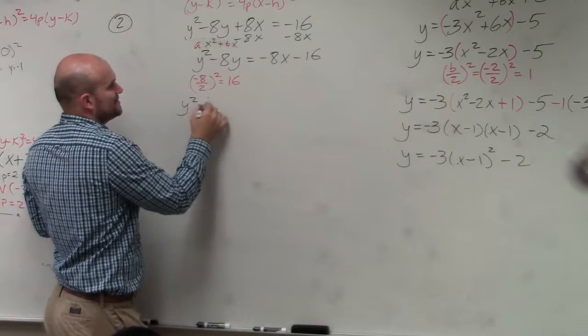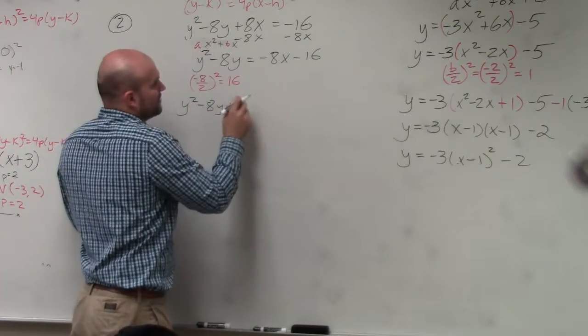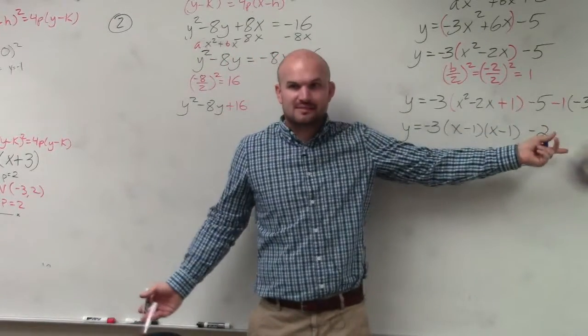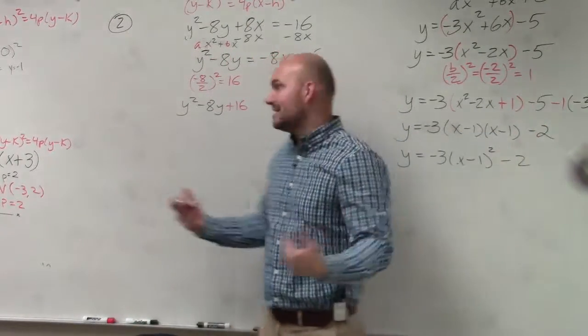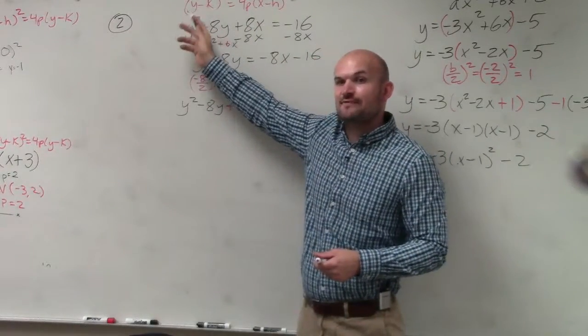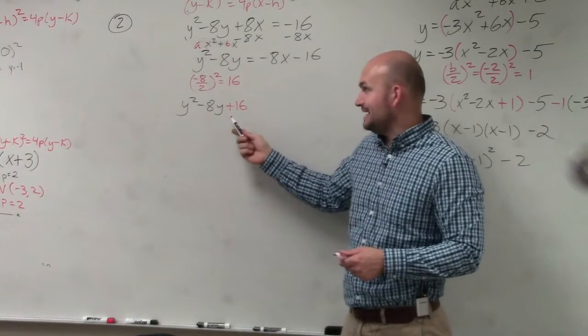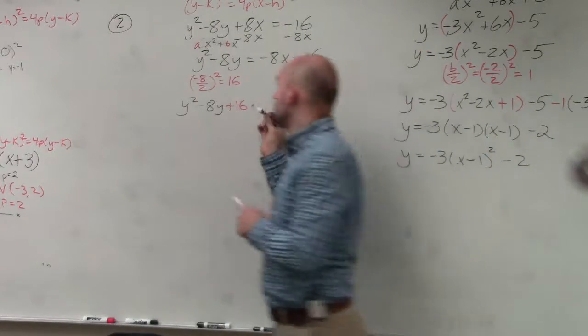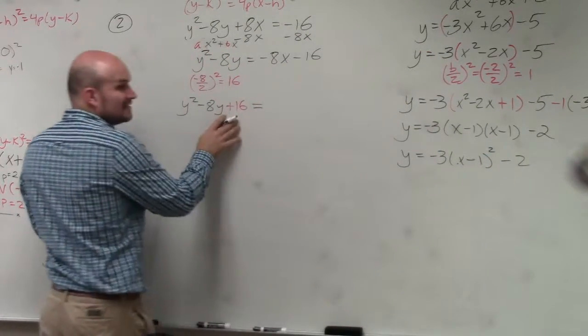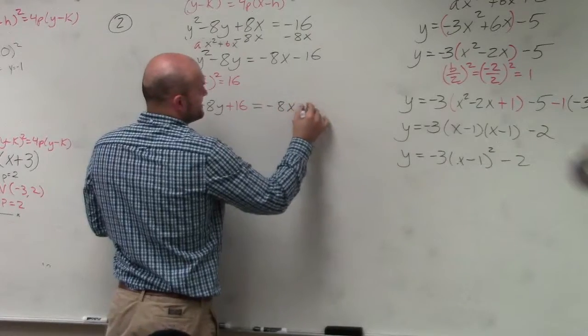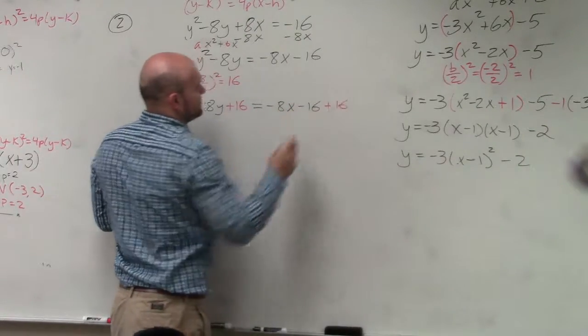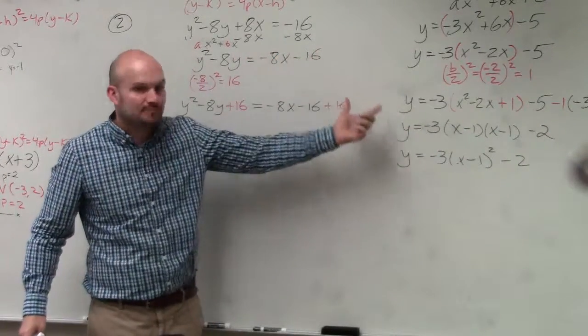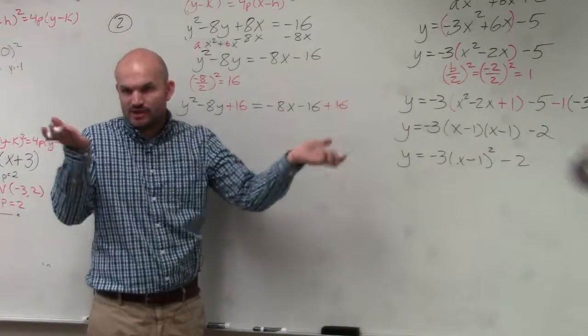Now, this is where sometimes students get confused. Remember when we were completing the square for these, for quadratics? I added and subtracted on the same side, right? Well, in this case, I don't want anything on the left side except for that binomial squared. So if I add 16 inside of here, I don't want to subtract 16 on the side. I want to put the 16 on the other side. So what I'm going to do is I'm going to add a 16 on the left side and I'm going to add a 16 on the right side. Because adding and subtracting on the same side is equivalent to adding on both sides, right? I still kept the equation the same. It's still balanced.